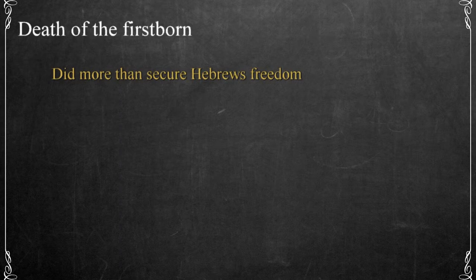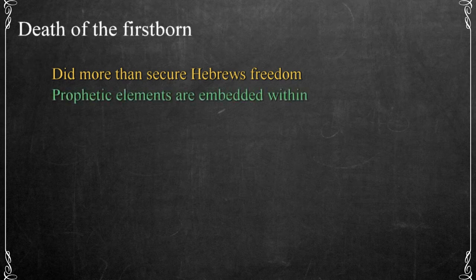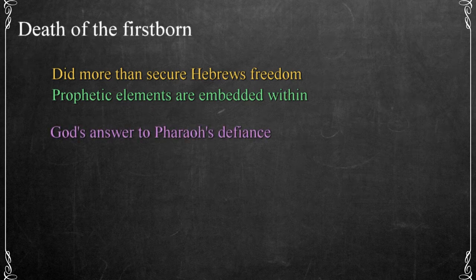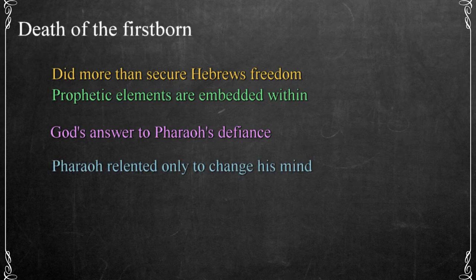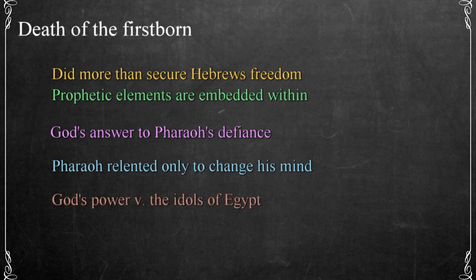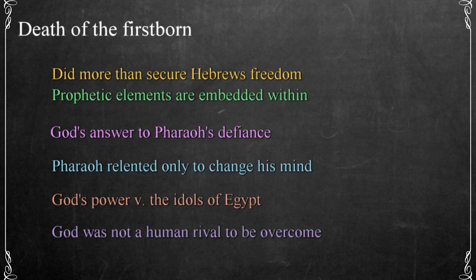The death of the firstborn wasn't just a final statement by God to acquire the Hebrews' freedom. As with many significant events in the biblical narrative, there are prophetic elements embedded within it. The plague was in answer to Pharaoh's insistent defiance of God. As each of the calamities affected Egypt, we see Pharaoh relenting to get a reprieve, only to reverse his attitude when the plagues ended. Each time Pharaoh was more defiant in his opposition to God, and we can only imagine that he thought either his will or the power of his gods would be enough to defeat the Lord.